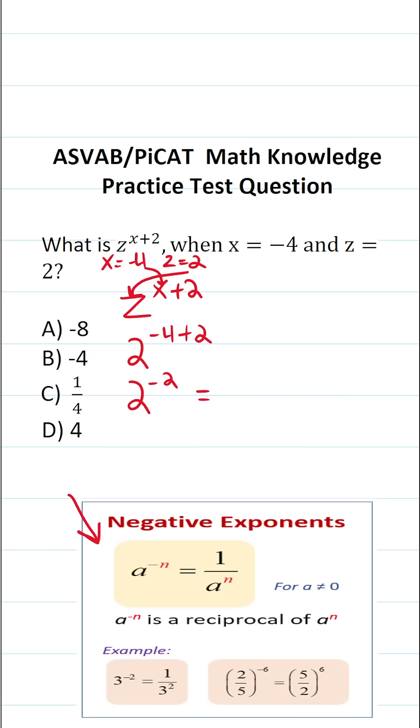In other words, 2 to the negative 2 power is the same thing as 1 over 2 to the 2 power. That is to say the exponent went from negative to being positive.